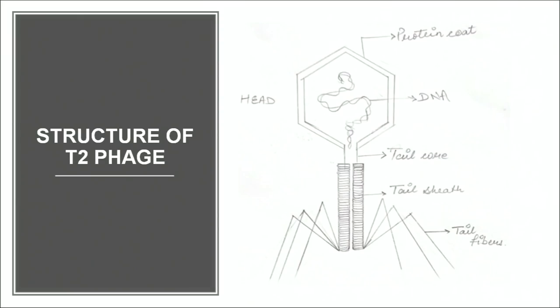This proves beyond doubt that DNA is the genetic material. Another scientist, Hershey and Chase, worked on a bacteriophage to prove beyond doubt that DNA is the genetic material. A bacteriophage is a virus that infects bacteria. This T2 bacteriophage infects E. coli. Just as HIV is a virus in humans and tobacco mosaic virus infects plants, the viruses which infect bacteria are the bacteriophages. Bacteriophage has a very simple structure — it has a protein coat and DNA present inside the protein coat.